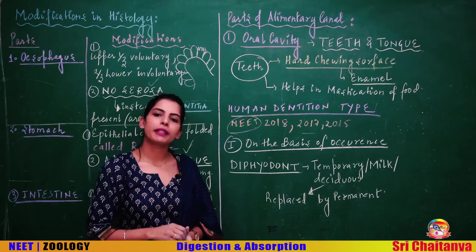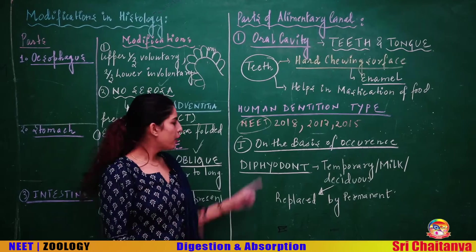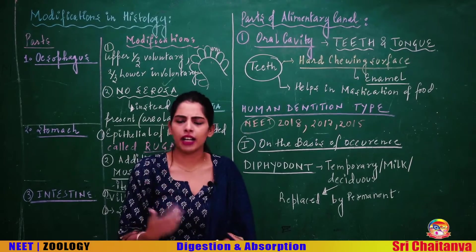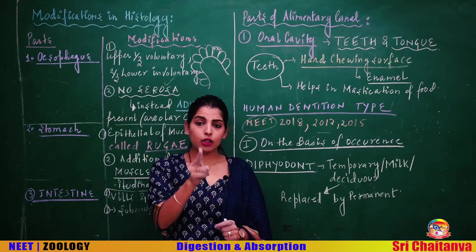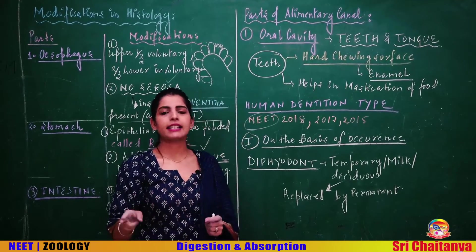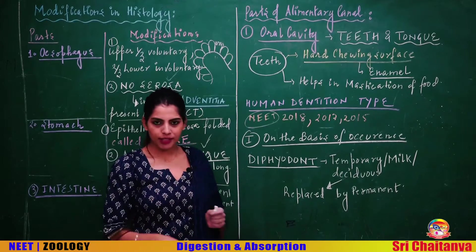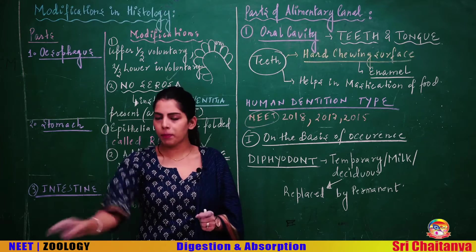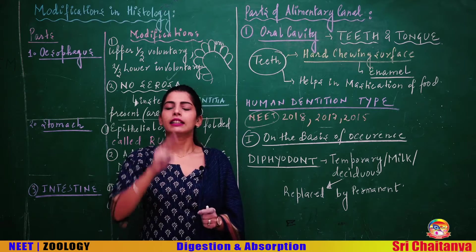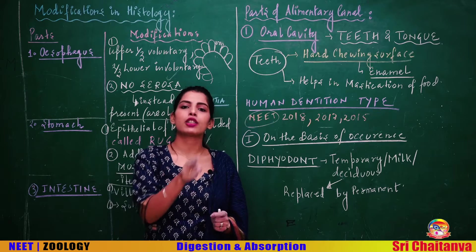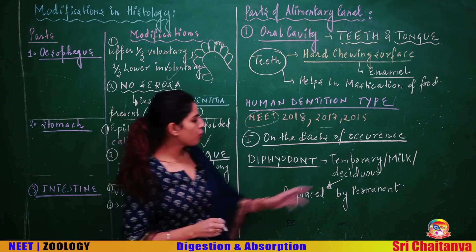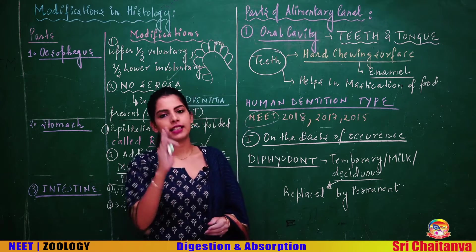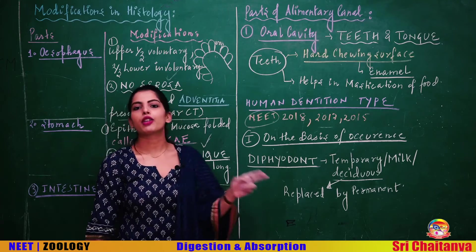Beginning with dentition on the basis of occurrence — how many times teeth occur in a lifetime. Human teeth are called diphyodont, meaning two times. We have two sets of teeth: temporary teeth (also called milk teeth or deciduous teeth) replaced by a permanent set. Two sets of teeth in a lifetime — this is diphyodont dentition.